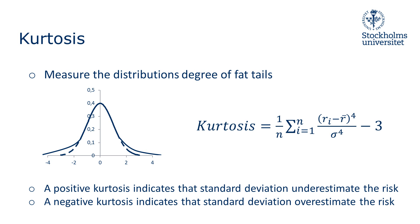Kurtosis is calculated by adding up all the deviations from the mean raised to the power of 4, divided by the number of observations times the standard deviation raised to the power of 4. Since we assume 3 for a normal distribution, we deduct 3 to get 0 as the expected kurtosis.